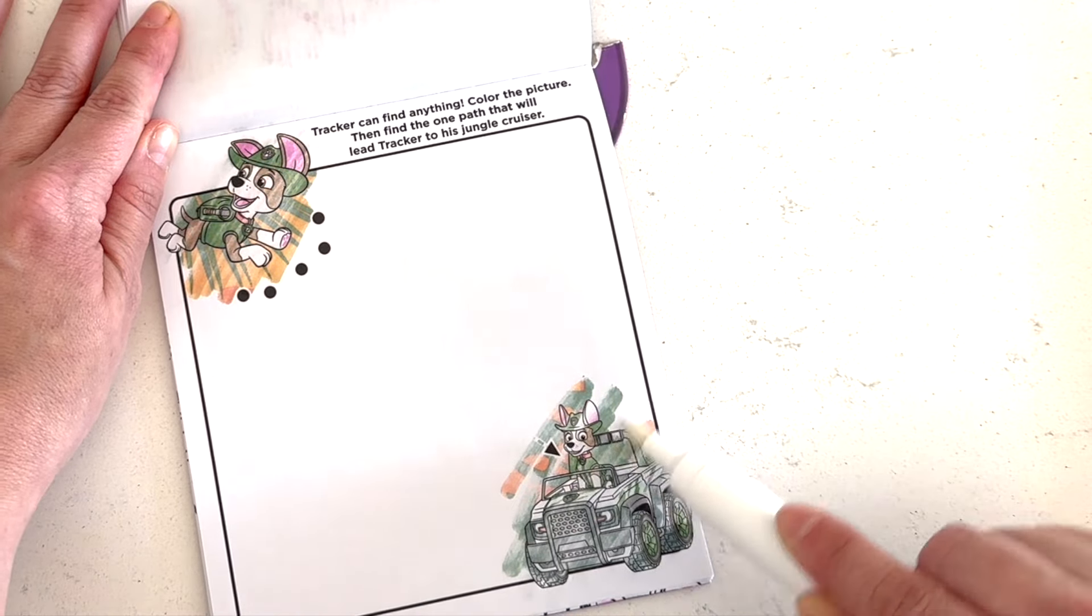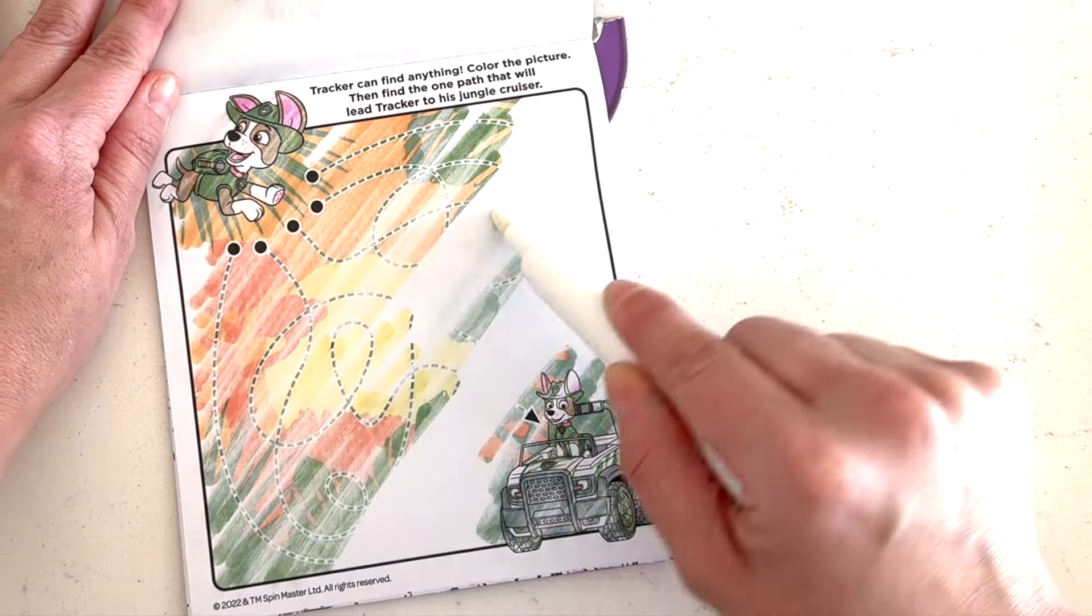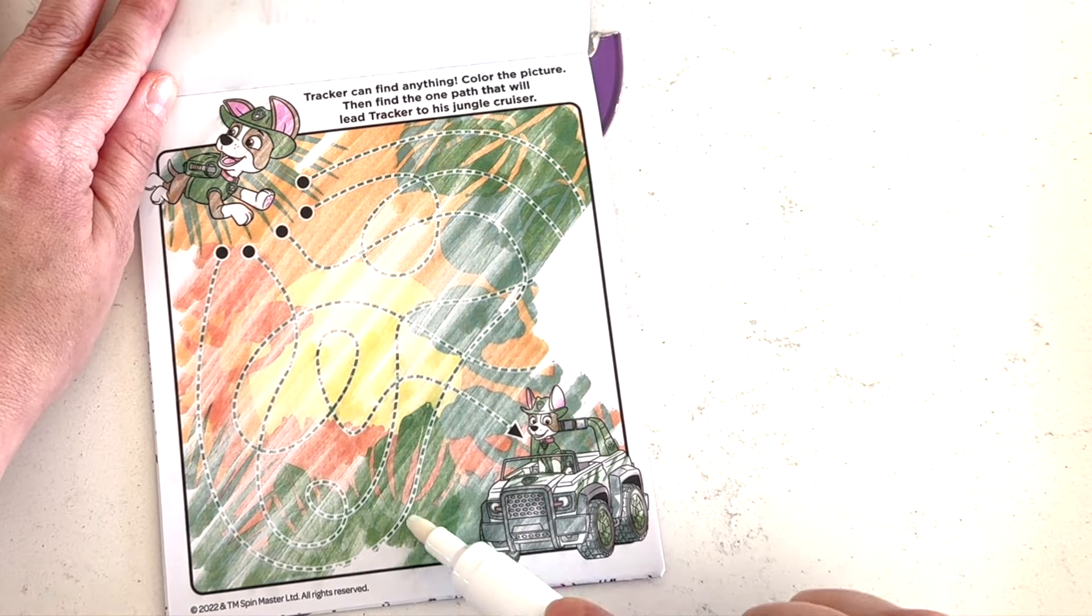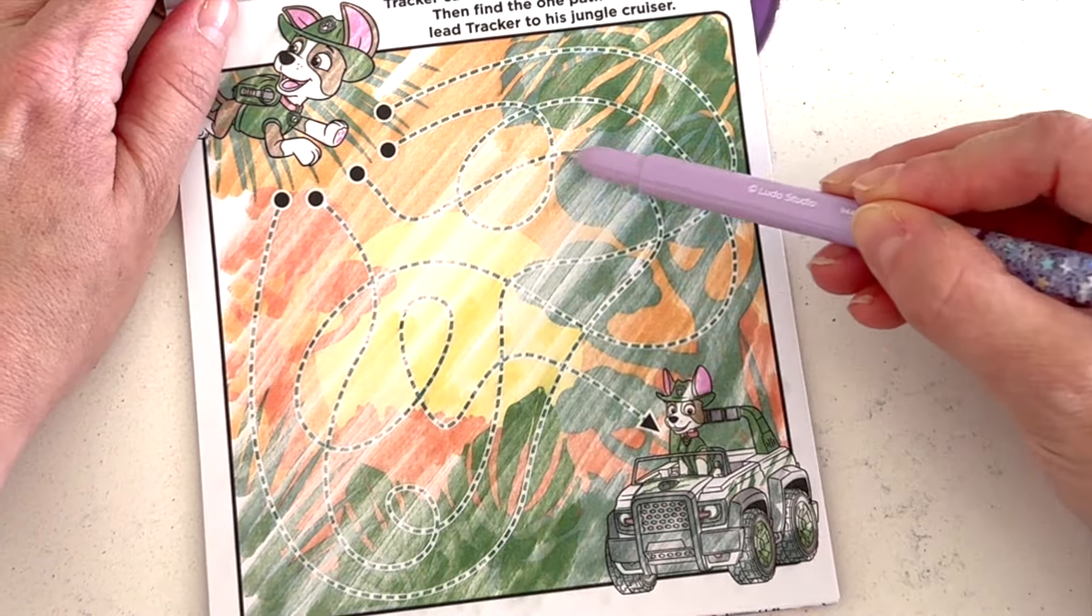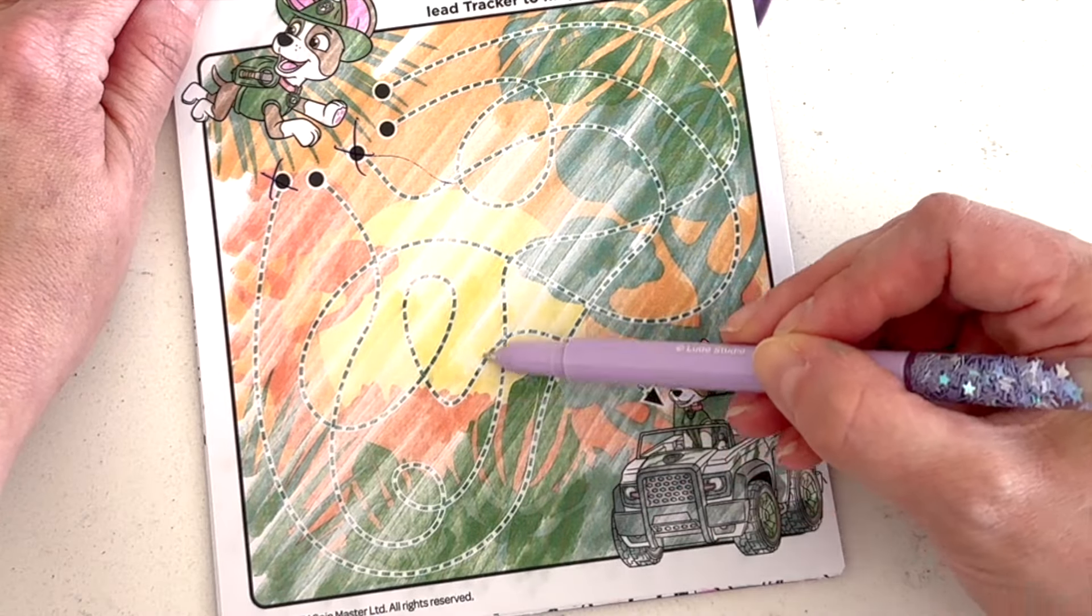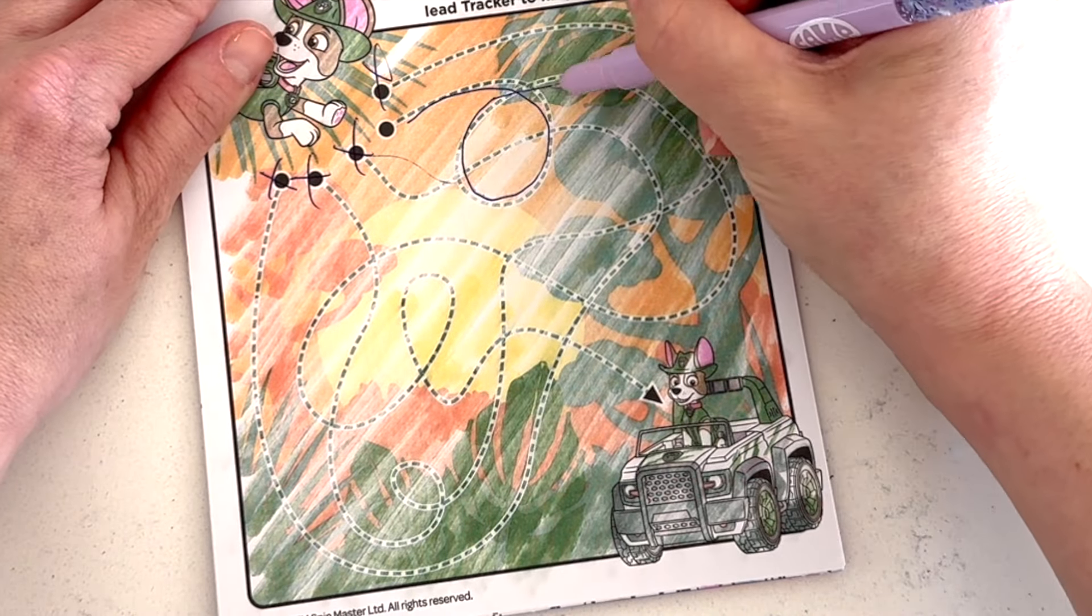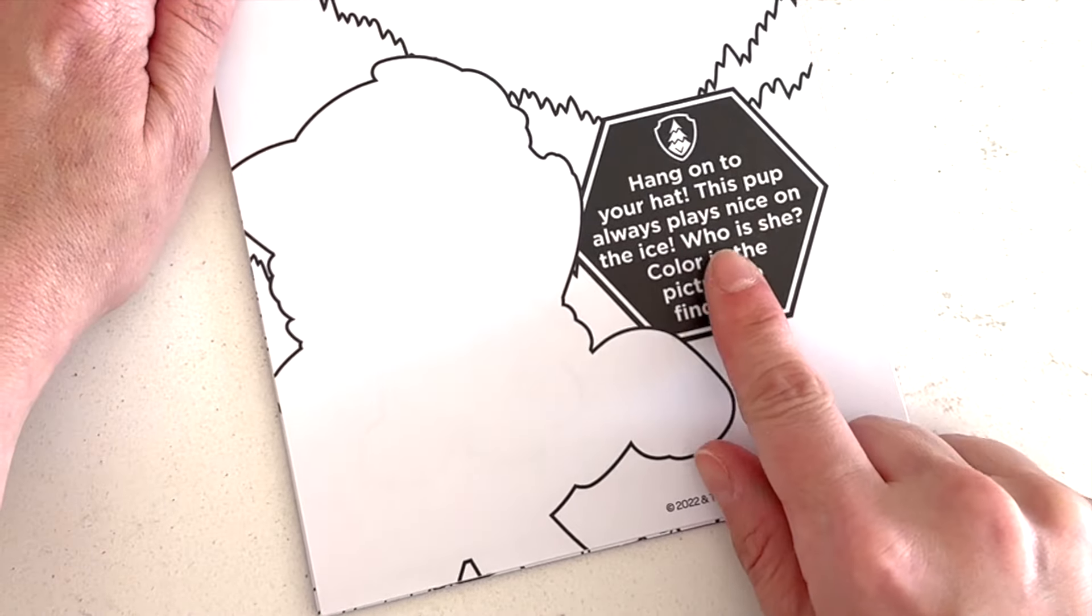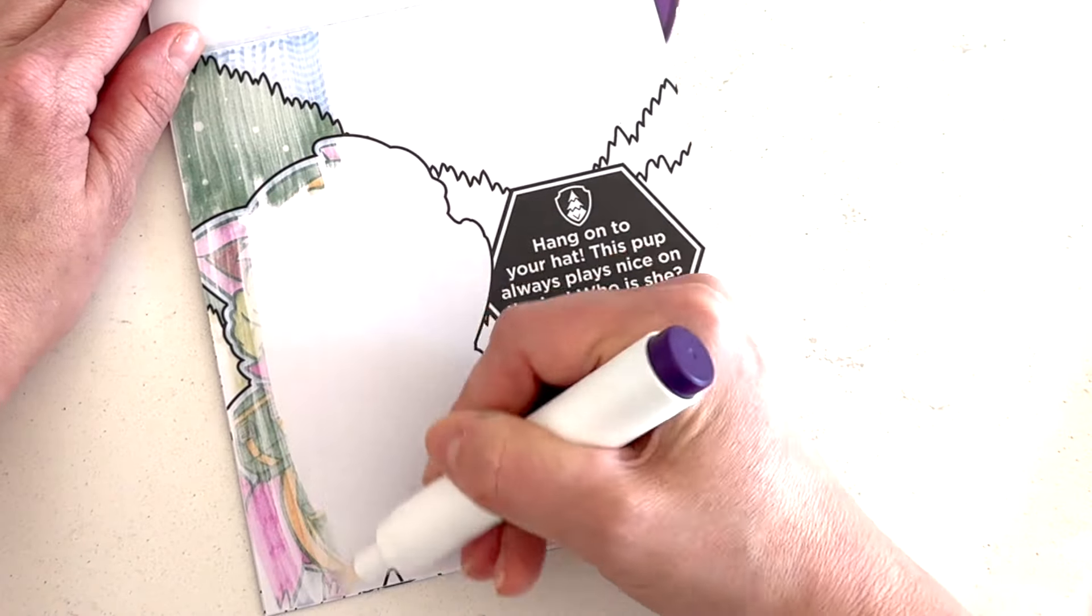Tracker can find anything. Color the picture, then find the one path that will lead Tracker to his jungle cruiser. All right. Start with Tracker. Trying to get to his jungle cruiser. That's so cool. Okay. Hmm. Let's see. This one goes all the way around and ends up there. So we know it's not that one or that one. Let's follow this one. Whoop-de-loop. Nope. It's not that one or that one. It must be this one. Whoop-de-loop. Yay. We got him to his jungle cruiser.